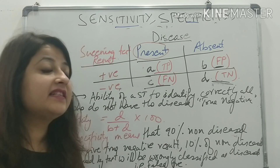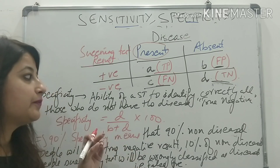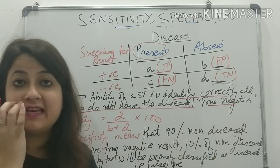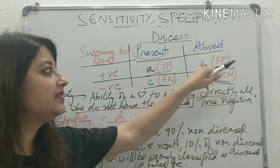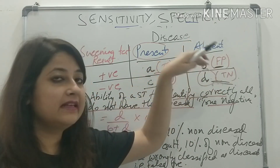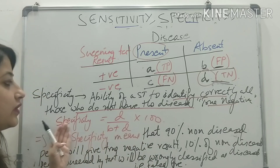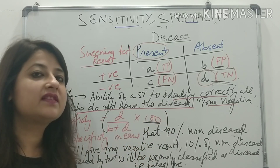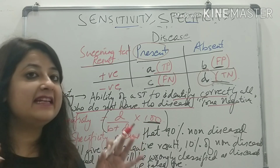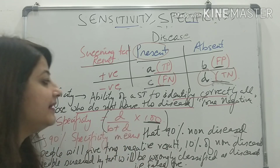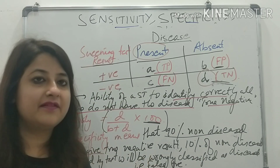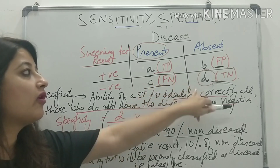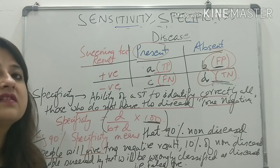Similarly, let's understand specificity. Specificity is the ability of a screening test to identify correctly all those who do not have the disease — that means it has the ability to identify all the true negatives. All those who do not have the disease is D, out of all those in whom disease is absent, which is B plus D. So specificity is D upon B plus D into 100. If I say 90% specificity, it means 90% of non-diseased people will give a true negative result, and 10% of non-diseased people would be wrongly classified as false positive.